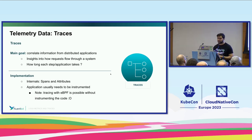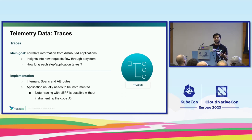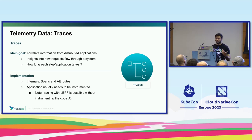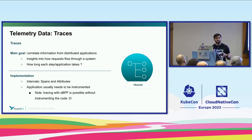Traces — as we continue to build distributed applications not just on a single server, we want to understand how things are flowing through a system, service mapping, how long steps are taking. Are we spending a lot of time talking to a database or a particular end application? Within that implementation, we're seeing awesome things around spans, attributes, and even eBPF — extended Berkeley Packet Filter — where you don't even have to instrument some of that code; it can be done at the kernel level.